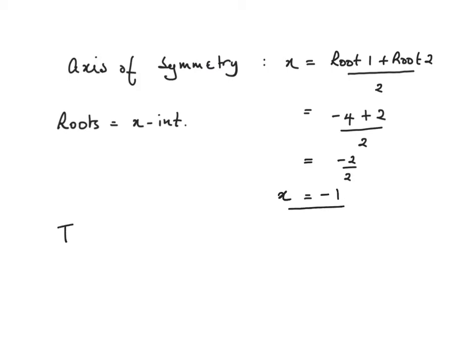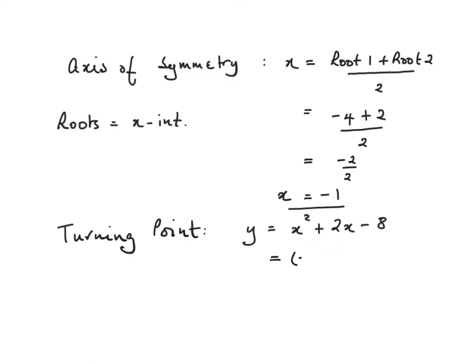The next thing to do is work out the coordinates of the turning point. The function we're sketching is x squared plus 2x minus 8. We substitute x equals minus 1 into the equation, replacing each x with minus 1. So y equals minus 1 squared plus 2 times minus 1, minus 8. Minus 1 squared is 1, then minus 2, minus 8, giving minus 9. So the turning point is at (−1, −9).